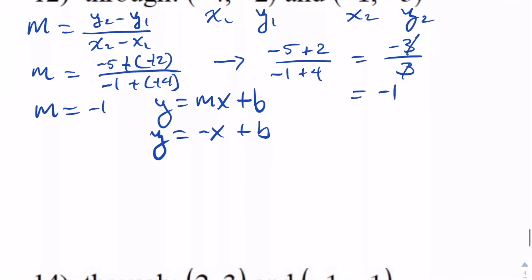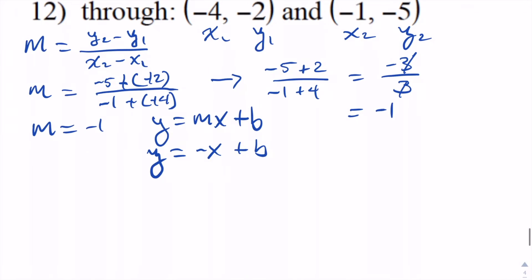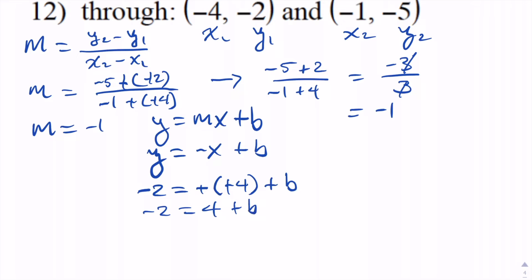Now the next thing is to find b, and we do that by using one of the coordinates. The point negative 4, negative 2 works for x and y. So we replace y with negative 2 and x with negative 4, then plus b. Negative times negative 4 becomes positive 4, so we have negative 2 equals 4 plus b. To get b by itself, I subtract 4 from both sides, and negative 2 minus 4 gives me negative 6, so b equals negative 6.